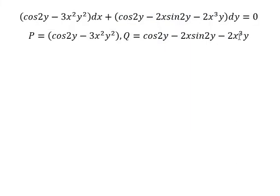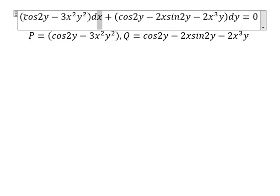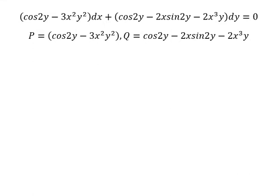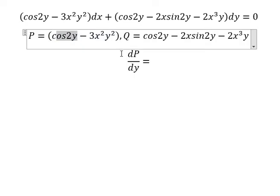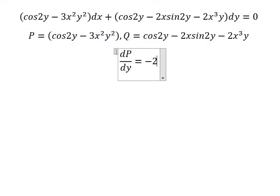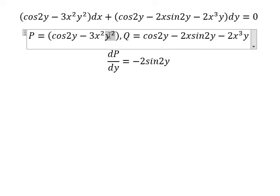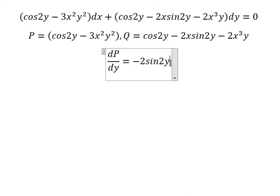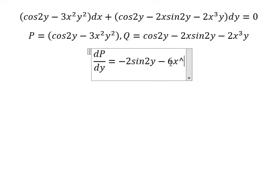Because we have dx, that means we need to do the first derivative of the function with respect to y. So we have dP over dy. We do the first derivative of this one — we have negative two sin(2y). We do the first derivative of this one — we will have negative six s squared y.